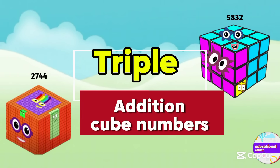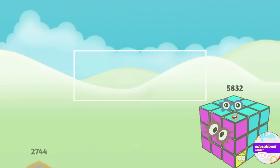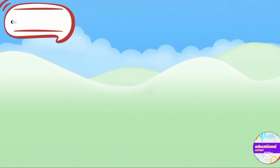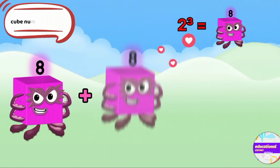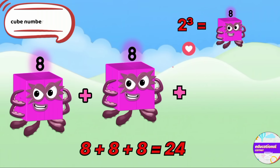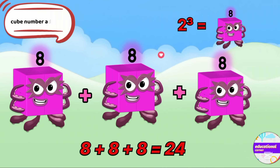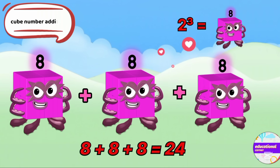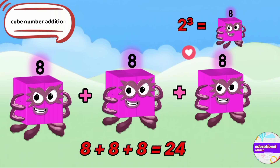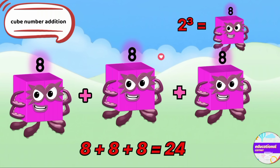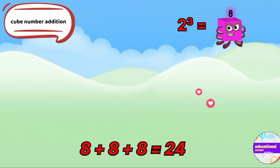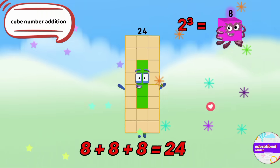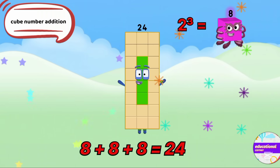Triple addition of cube numbers. The cube of 2 is 8. When we add 8 three times, the answer is 24.